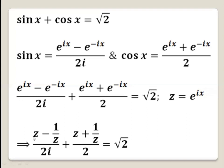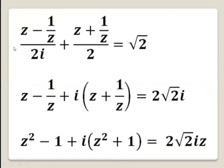So we have (z minus z^(-1)) over 2i, where z^(-1) is 1 over z, plus (z plus z^(-1)) over 2, equals square root of 2. Now we can multiply the whole equation by 2i. So we have z minus 1 over z, and here, multiplying by 2i, we cancel out the 2s, leaving i, so we have z plus 1 over z equals 2 square root of 2 times i.